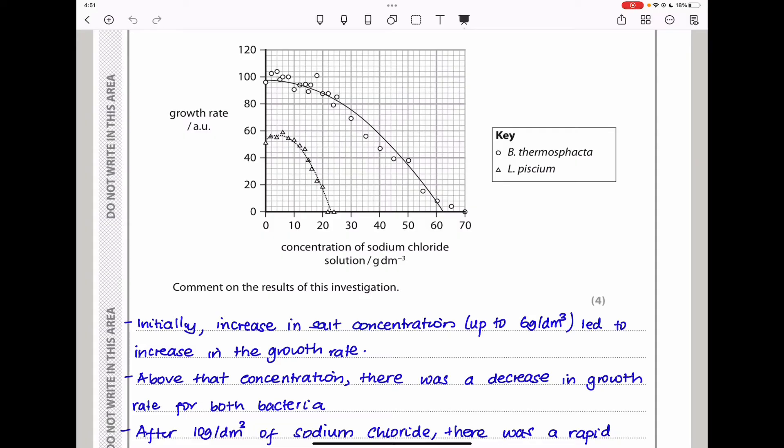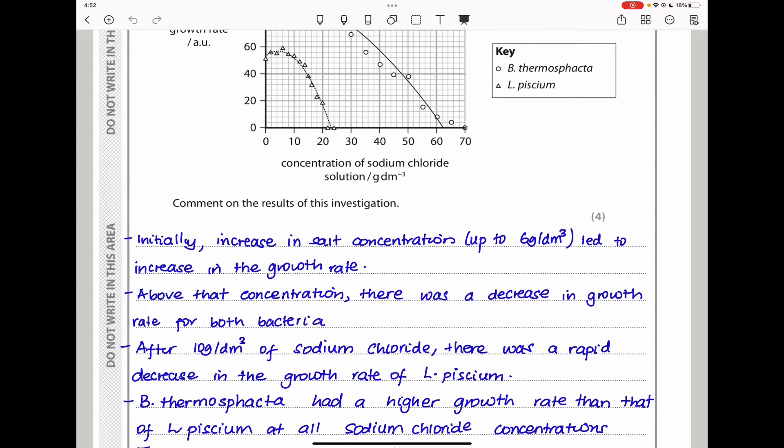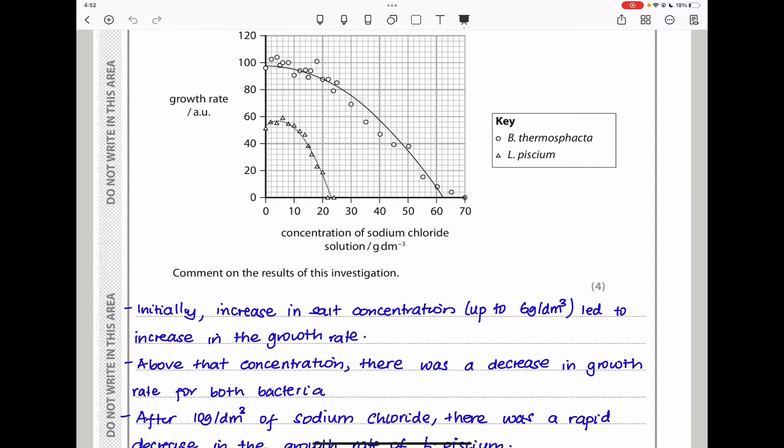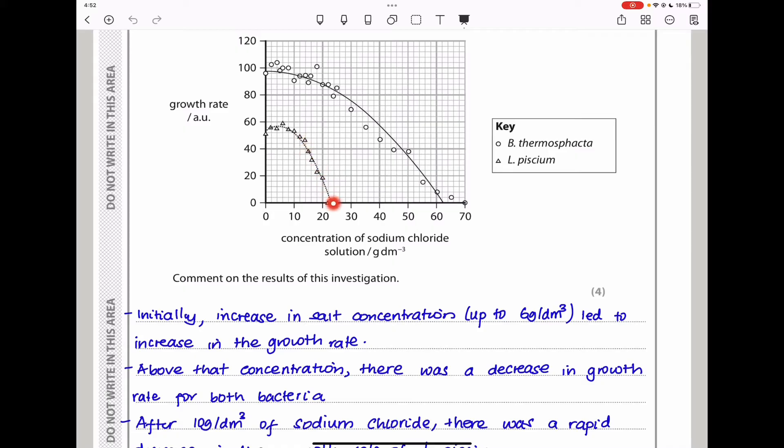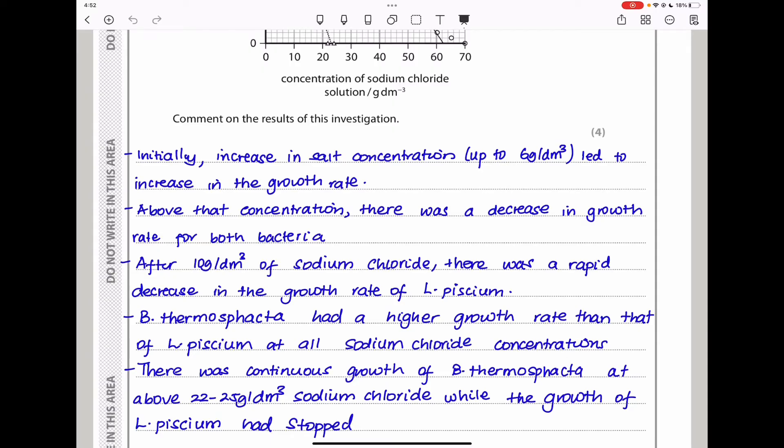Initially, increase in salt concentration up to 6 grams per decimeter cubed led to increase in growth rate. You can see initially there is an increase in growth rate. Then, above that concentration, there was a decrease in growth rate for both bacteria. After 10 grams per decimeter cubed of sodium chloride, there was a rapid decrease.